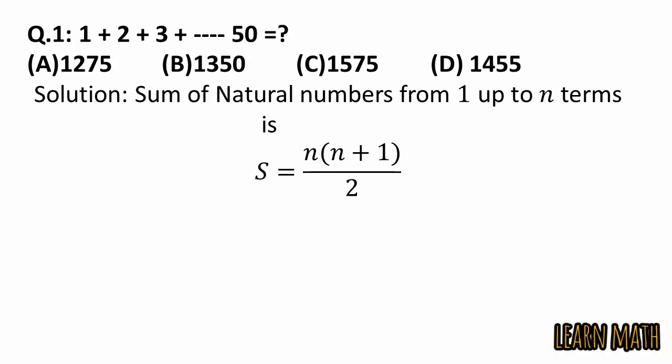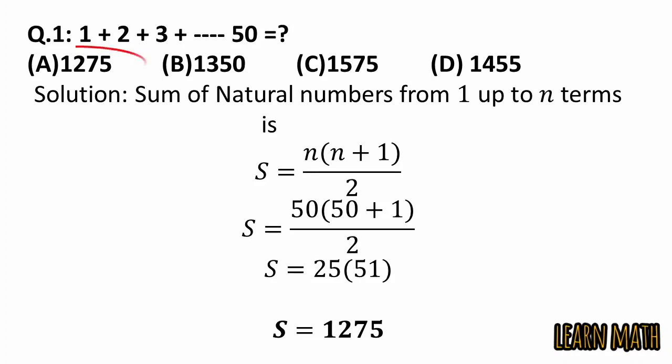In this case, n is equal to 50. So just put n is equal to 50. And S is equal to 50 into 50 plus 1 divided by 2. 2 will be cancelled with 50, and S is equal to 25 into 51, that is equal to 1275. And the correct answer is option A.